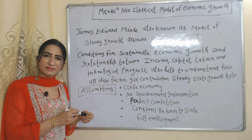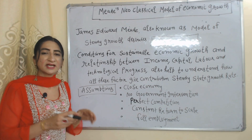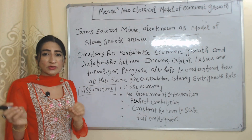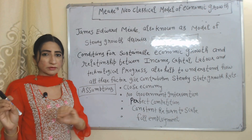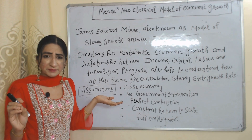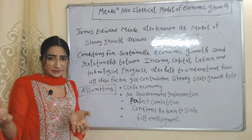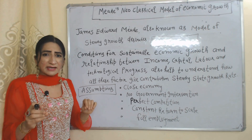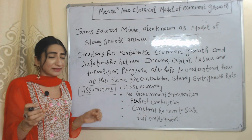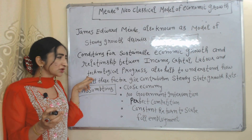Hello everyone, my name is Munazza. I hope you all are staying healthy. Today we are going to talk about Mead's neoclassical model of economic growth. This model is given by James Edward Mead and is also known as a model of steady growth rate. It describes conditions for sustainable economic development and the relationship between income, capital, labor, and technological progress.